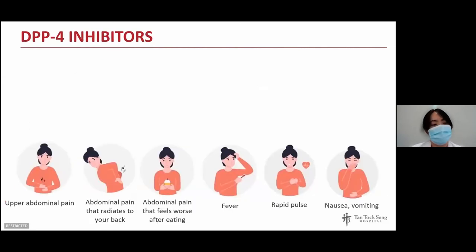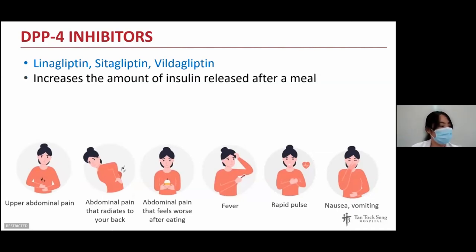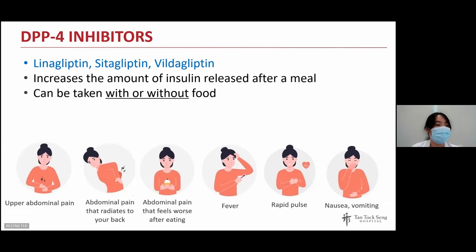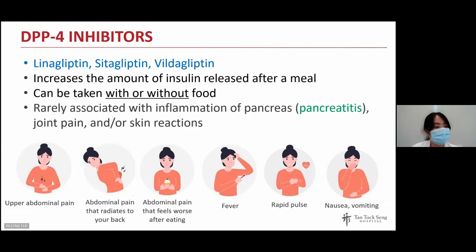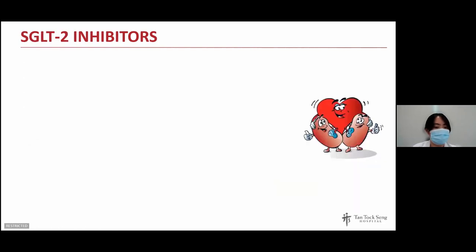The next group is sulphonylureas, including glipizide and tolbutamide. These increase the amount of insulin released by the pancreas and should be taken immediately before or up to 30 minutes before food. Because they are commonly associated with low blood sugar if meals are skipped or appetite is poor, we suggest omitting the dose if skipping meals entirely. The next group is DPP-4 inhibitors, including linagliptin, sitagliptin, and vildagliptin. These increase insulin released when blood sugars are high — usually after a meal — and reduce sugar production by the liver. They can be taken with or without food, and rarely may be associated with joint pain, skin reactions, and pancreatitis — inflammation of the pancreas — with symptoms including upper abdominal pain radiating to the back, increased heart rate, fever, or nausea and vomiting.